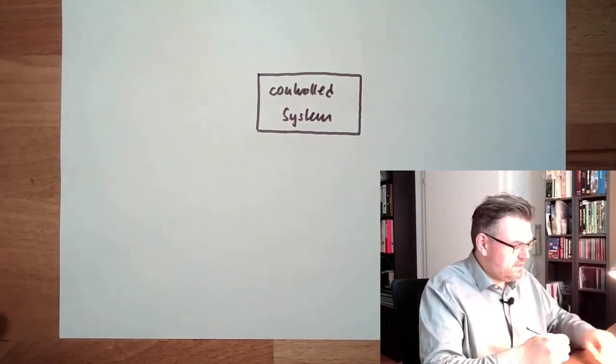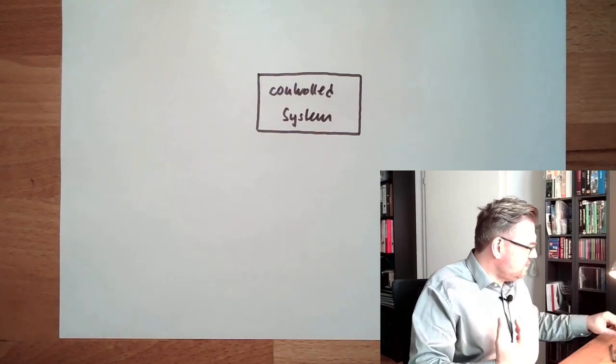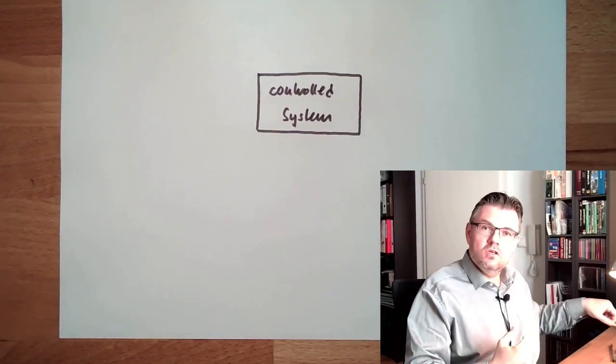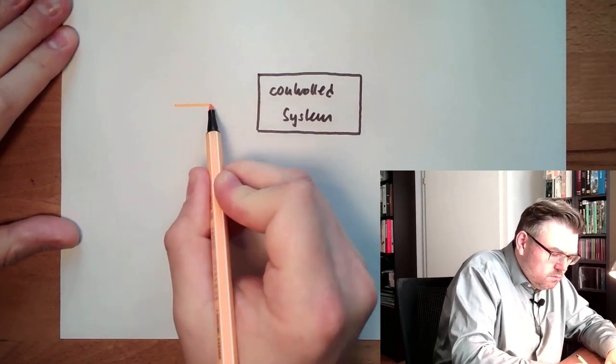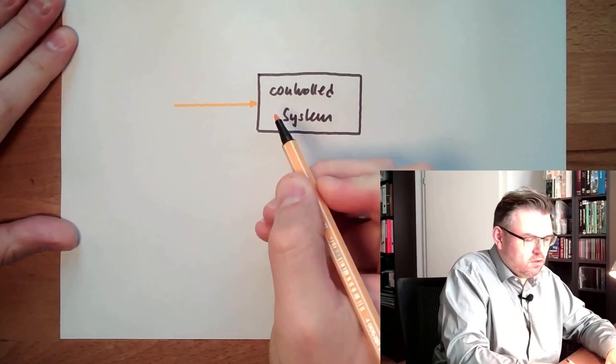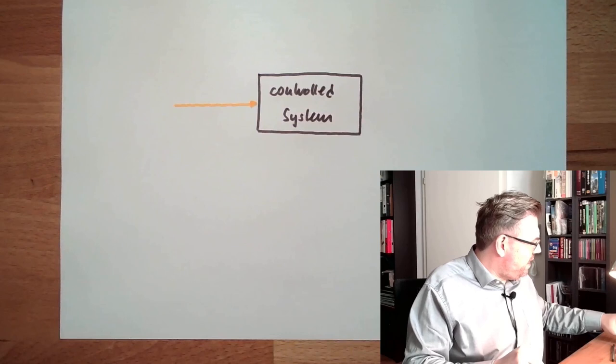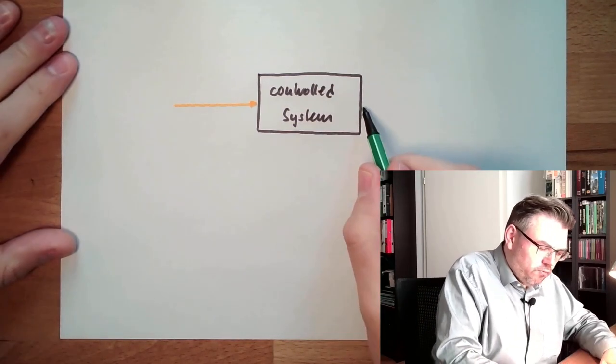And this controlled system has an input. In our case, this input is the correcting variable going in. And the output is the controlled variable.